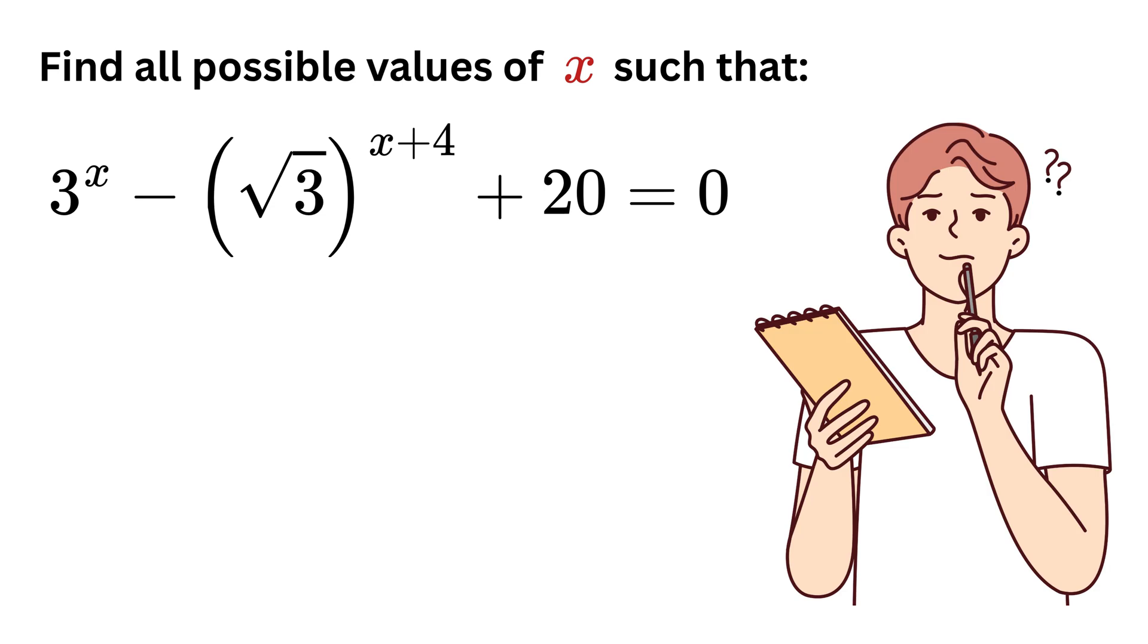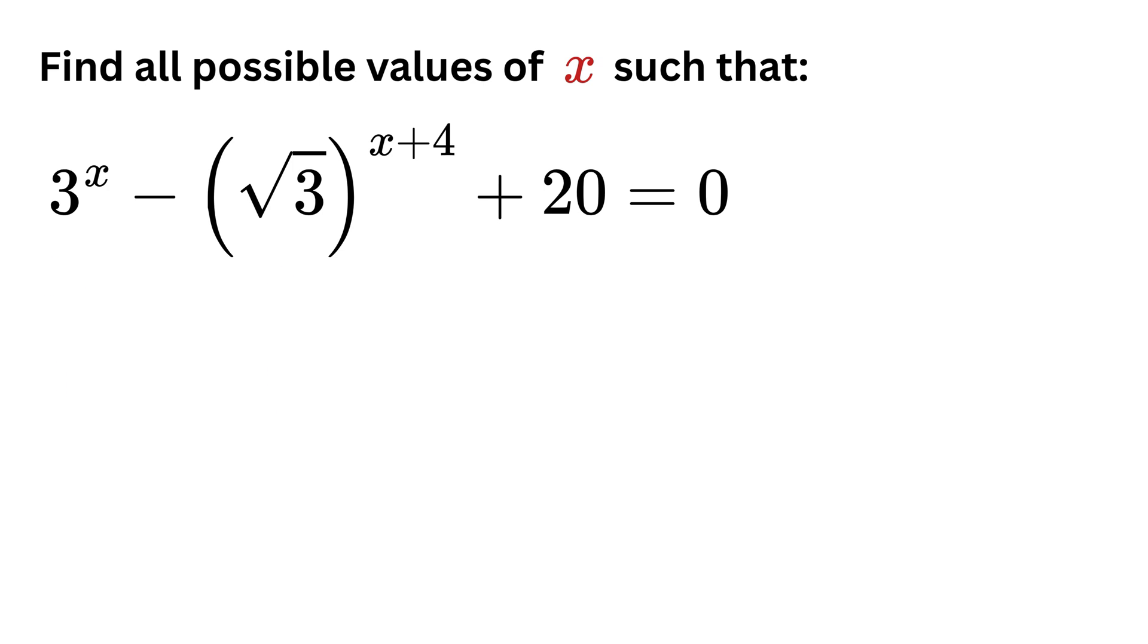Okay, how to even approach this question? First notice that we have two exponential terms but with slightly different bases: one is 3 raised to x and the other is root 3 raised to x plus 4. The key idea is to rewrite both in terms of the same base, which is 3 for this case.